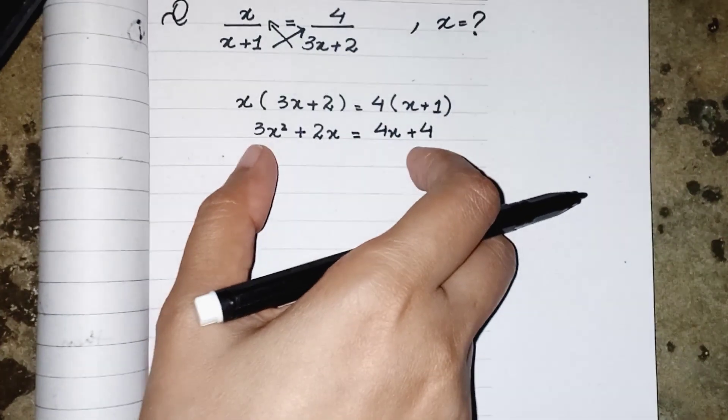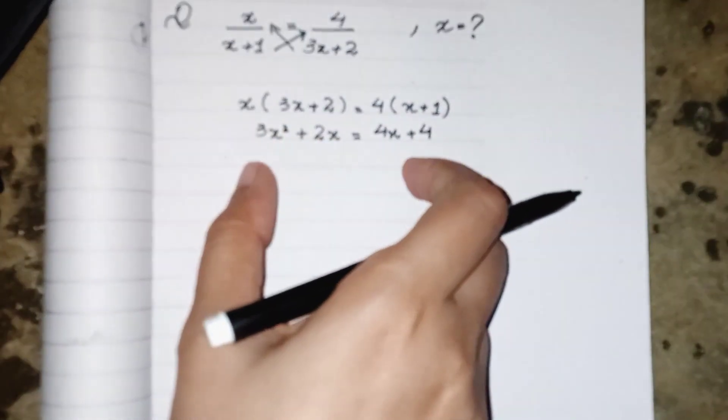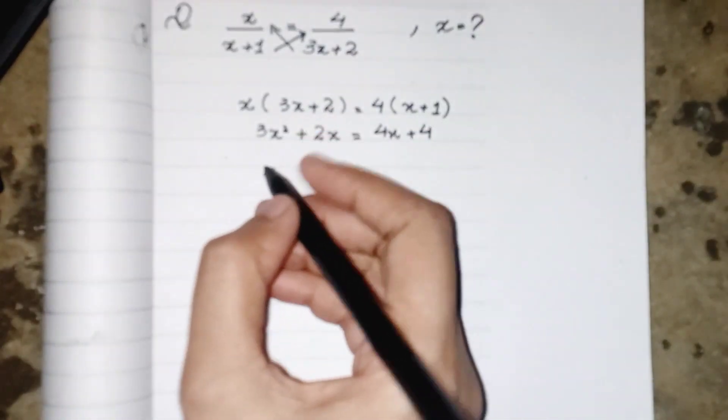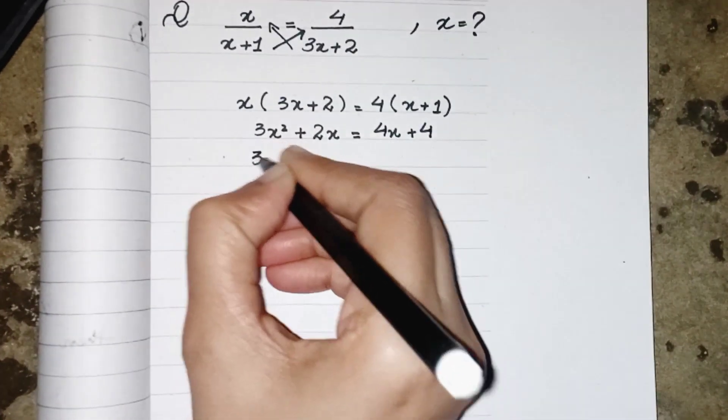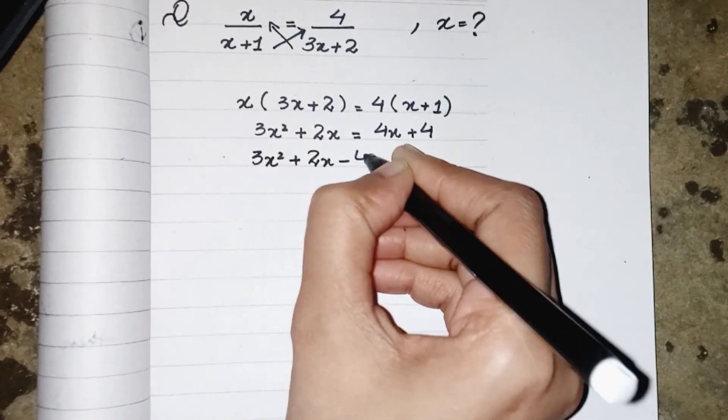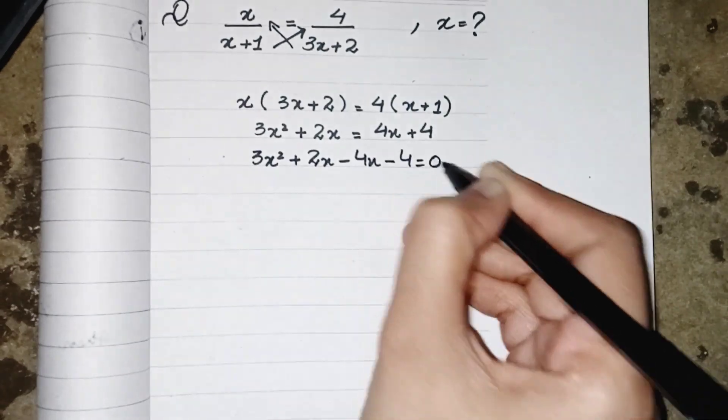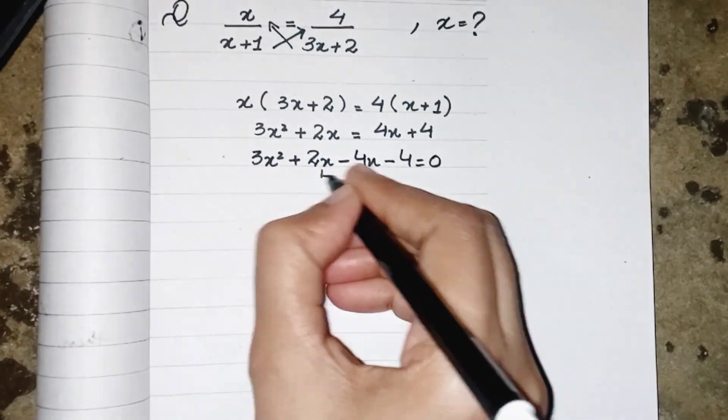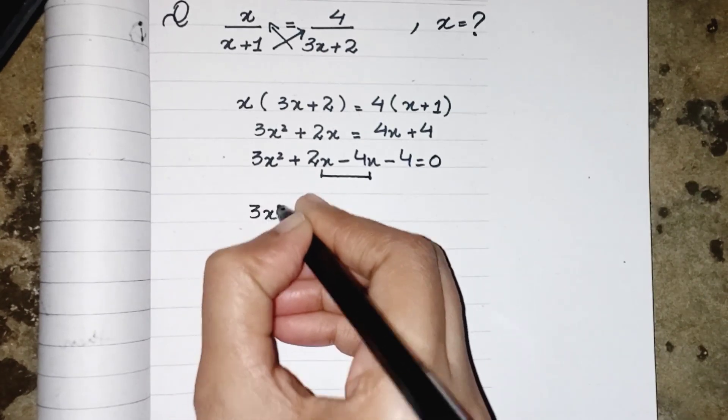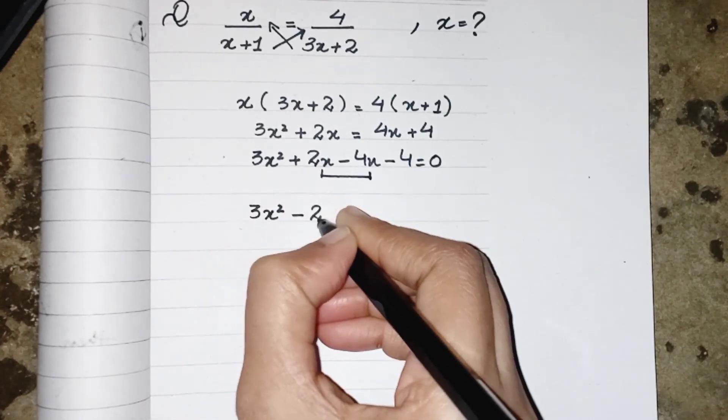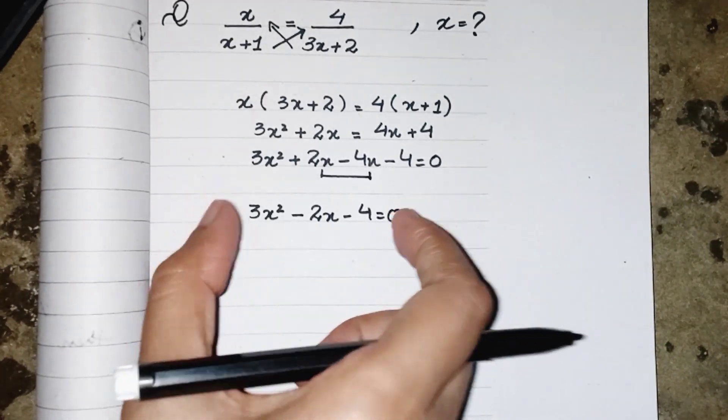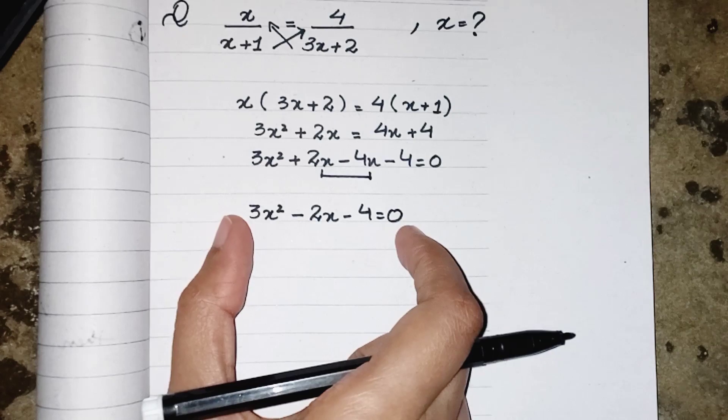Now we have to write the equation in its standard form which means all the terms on one side and on other side we have 0. 3x² + 2x - 4x - 4 = 0. Both are like terms so they both can be solved. 3x² - 2x - 4 = 0. Now this one is a quadratic equation.